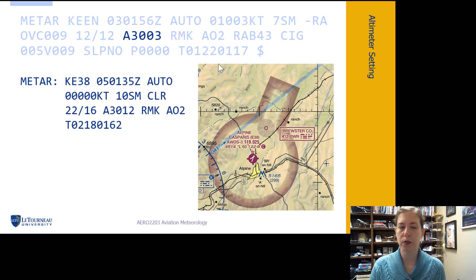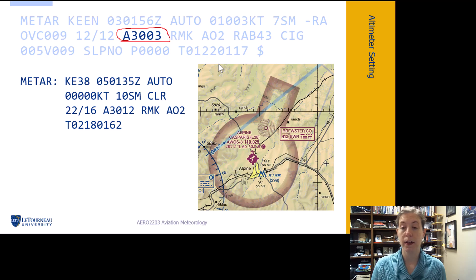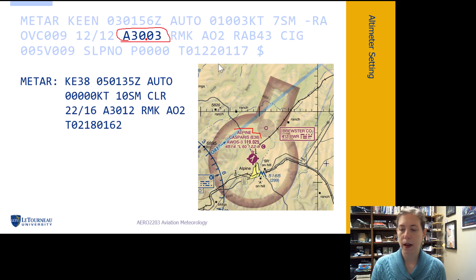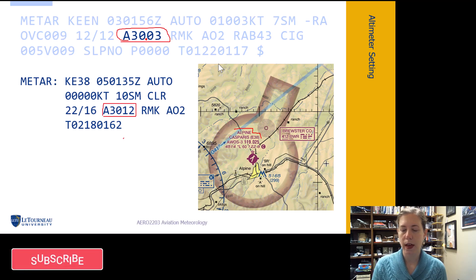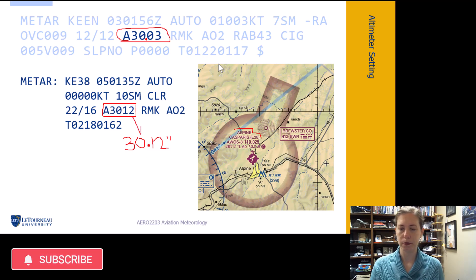The next group is the altimeter setting group — our current pressure at elevation. It starts with the letter A. There's no decimal point shown, but it's obvious where to place it once you realize it's in inches of mercury. Here's another example from what looks like an alpine airport: altimeter setting A3012, which means the station pressure is 30.12 inches of mercury. That's how we read the altimeter setting.